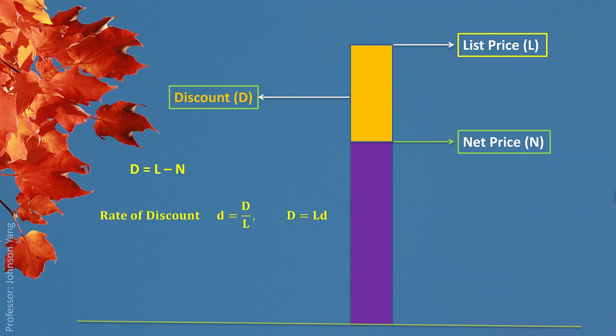We can also look at it from a different way. We calculate how much percent the discount takes of the original list price — that means capital D divided by original list price L. This is called the rate of discount, and we use lowercase d to represent it. With this basic understanding about trade discount, we have a few different mathematical expressions showing the relationship between net price and list price. The bracket (1 minus d) is also called the net price factor. So we use list price multiplied by net price factor to get net price.